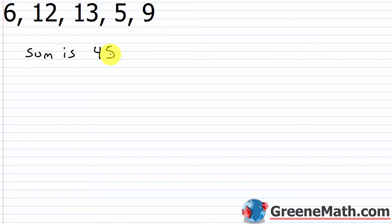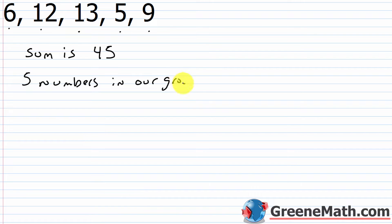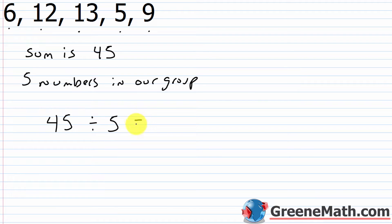Now we need to know how many numbers are in the group. Counting: 1, 2, 3, 4, 5 — there are 5 numbers in the group. To get the average, take the sum of 45 and divide by the number of numbers, which is 5. 45 divided by 5 is 9. So the mean, or average, is 9.